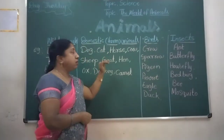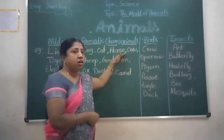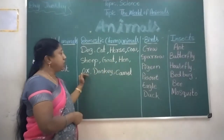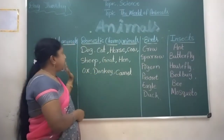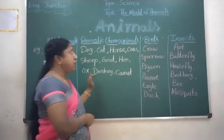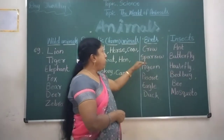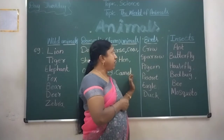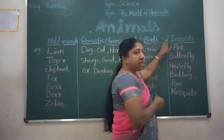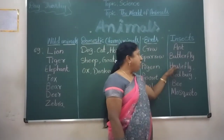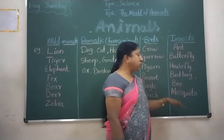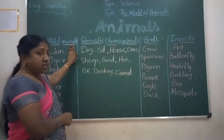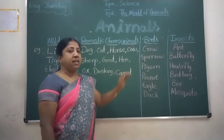Domestic animals: dog, cat, horse, cow, sheep, goat, hen, ox, donkey, camel. These are domestic animals. Next, birds: crow, sparrow, pigeon, parrot, eagle, duck, et cetera. Next, insects: ant, butterfly, housefly, mosquito, et cetera. So we have wild animals, domestic animals, birds, and insects.